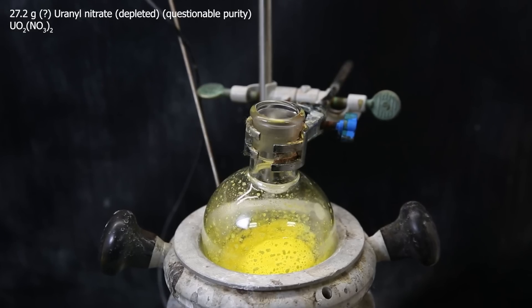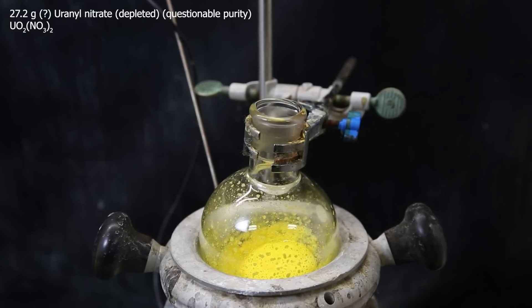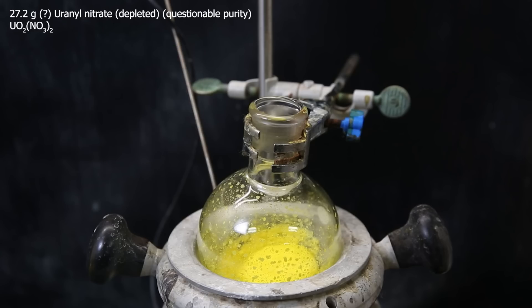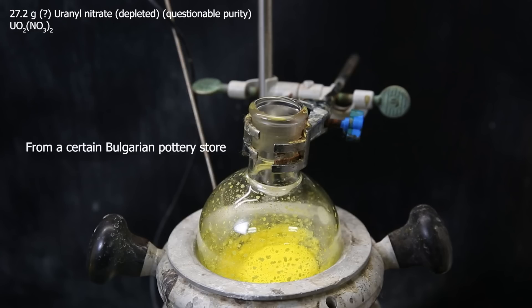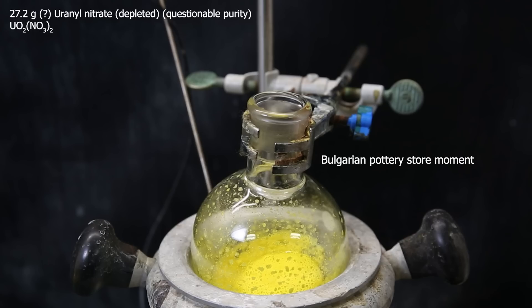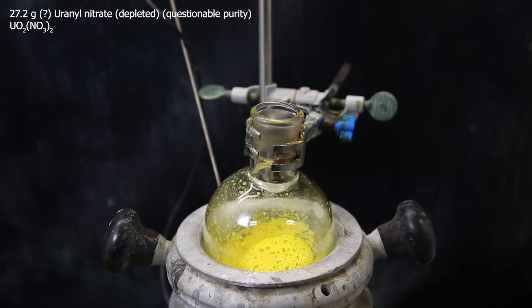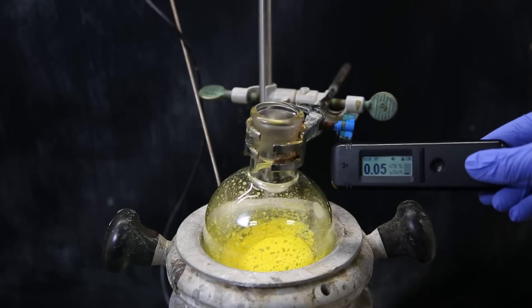So in this flask, I have some uranyl nitrate with questionable purity. Uranyl nitrate can be made very easily from naturally occurring uraninite, as I have shown in an earlier video. But what I have here, I bought directly. I originally had it in solution that I evaporated down in this flask. But that might contain some unknown components because I am a little skeptical about the source, and it might be partially contaminated with thorium oxide as well. Either way, these contaminants shouldn't be relevant for the process, but it will definitely affect the perceived yield. So we will ignore the yields for this one.